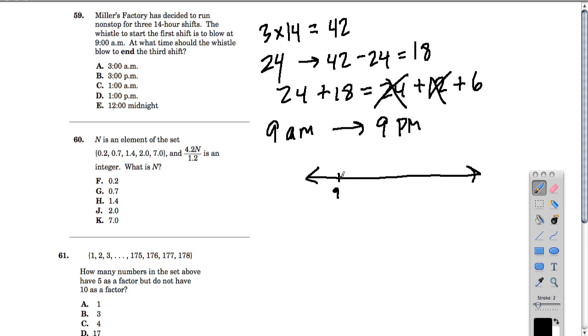So, here's 9 p.m., and then we're going to hop 6 times, 10, and then 11, 12, 1, 2, so here we have 3, 4 hops, 5 hops, and then there, 3 o'clock in the morning.